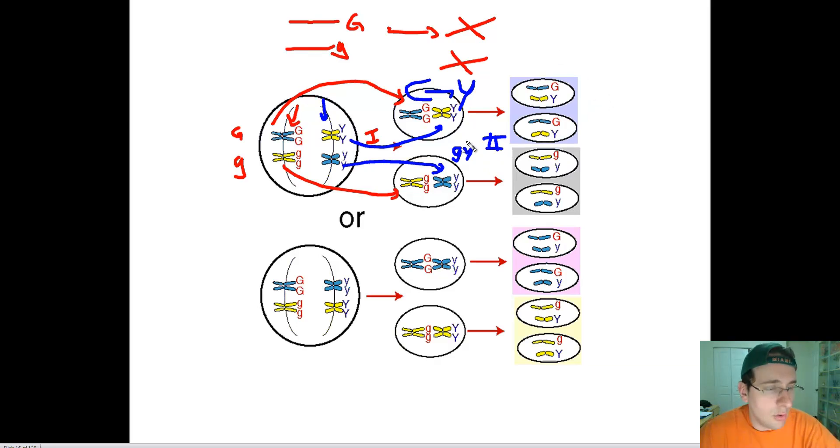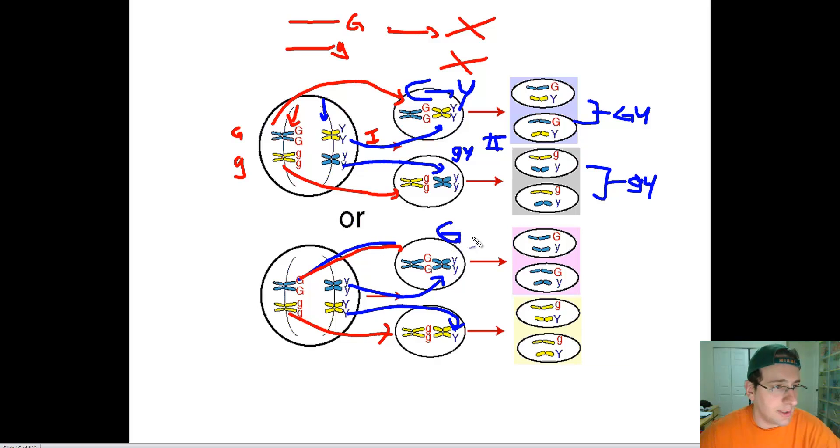When you go through meiosis two, all the cells in this group are going to be homozygous dominant for both traits, and all the cells in this group are going to be homozygous recessive for both traits. In the bottom, the separation of the homologs was different - big G went this way and little G went that way, but big Y went down here and little Y went up there. So you end up with cells that are big G little Y or little G big Y.